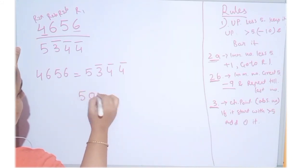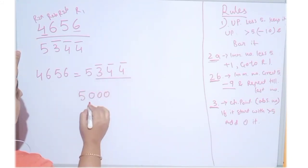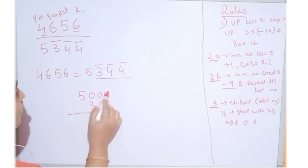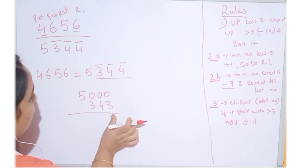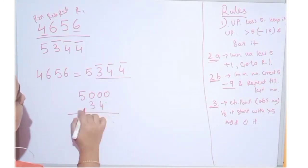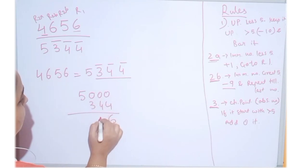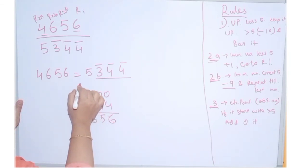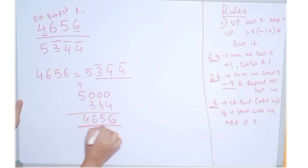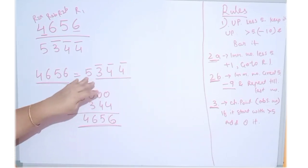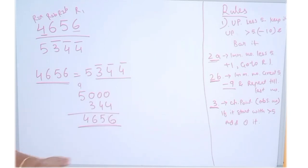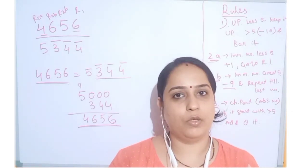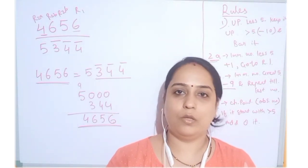We will verify this now. We can subtract directly: as we know, the last digit from 10 and the rest from 9. So 10 minus 6 is 4, 9 minus 4 is 5, wait — working through: 9 minus 3 is 6, 9 minus 4 is 5 — we get 4656 as the answer. For Vinculum it is 5, 3 bar, 4 bar, 4 bar. Normal number is 4656. I hope the concept is clear for normal number to Vinculum conversion. Practice the worksheet terms so that you get more clarity.